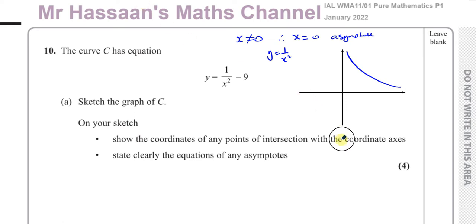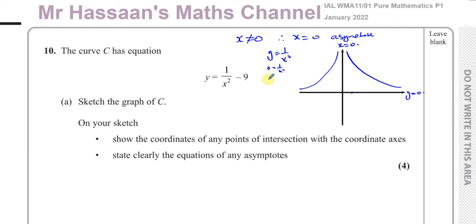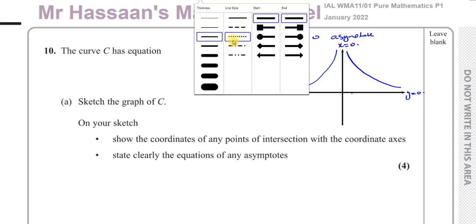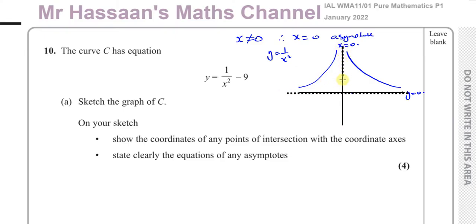For y equals 1 over x squared: when x is 1, y is 1; when x is minus 1, y is also positive 1; when x is 2, y is 4; when x is minus 2, y is also 4. So the graph is symmetrical, with a vertical asymptote at x equals 0, and a horizontal asymptote at y equals 0, since setting y equals 0 gives 0 equals 1, which is impossible.